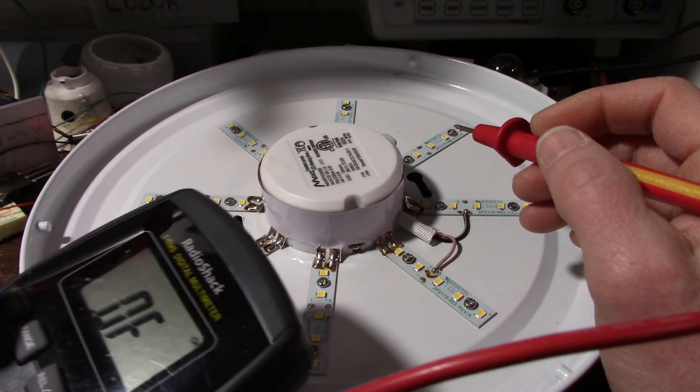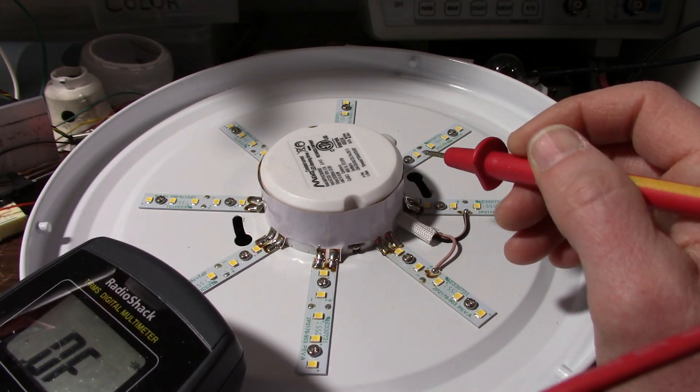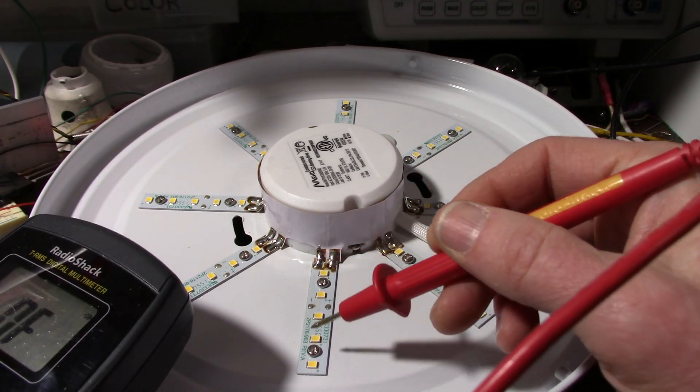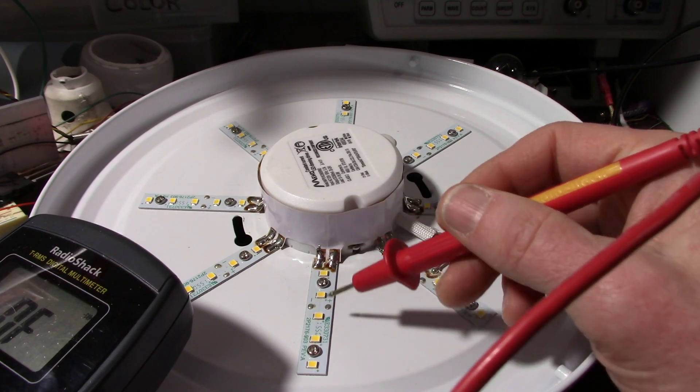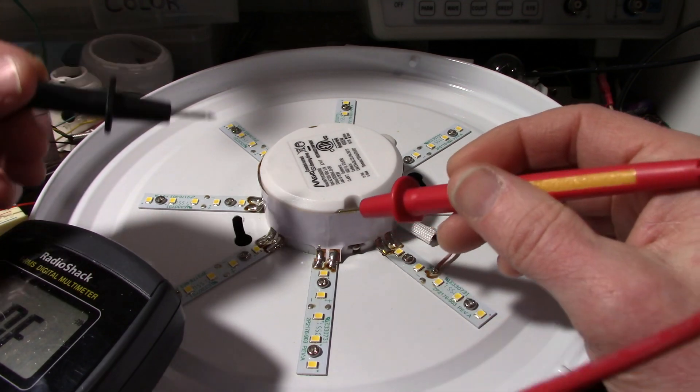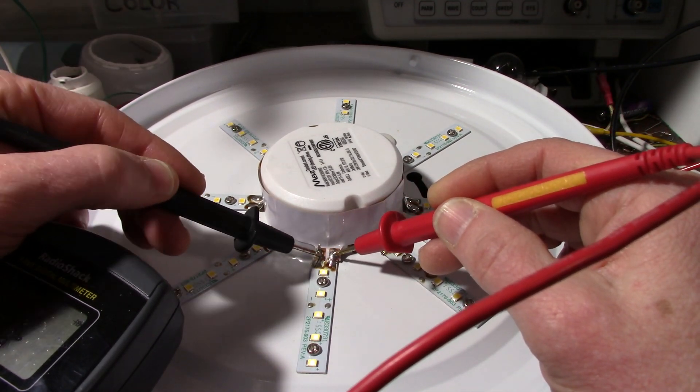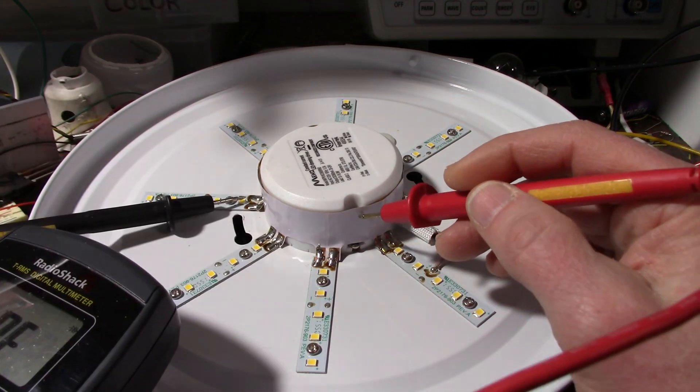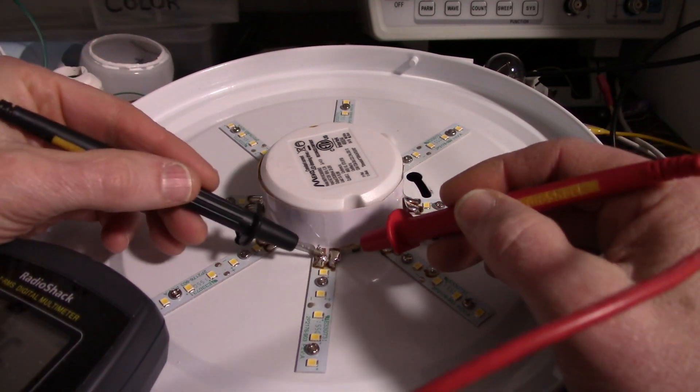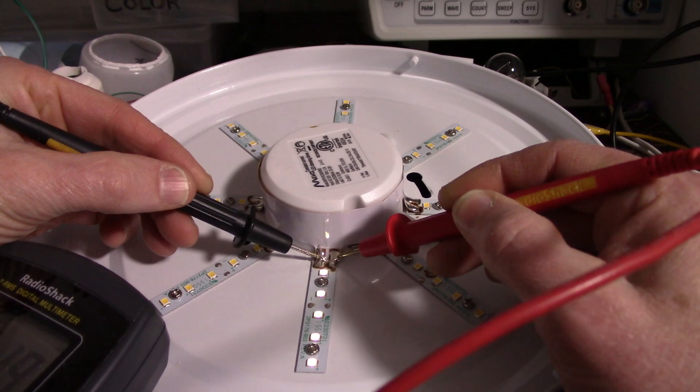But anyhow, I have my Radio Shack meter set on diode mode, and we'll see here if it lights these LEDs up. I can see by the traces that these are all in parallel, and I can look closely, it just looks like there's one die in there. So if I touch, there you go. Yep. I don't know if you can see that or not. Let me turn this overhead light off. Yep, you can see that they all light.